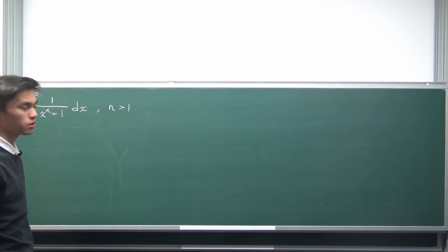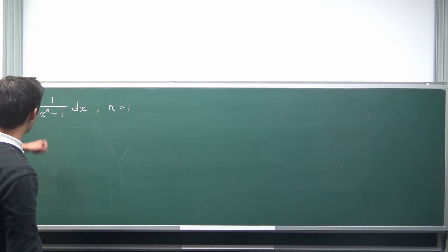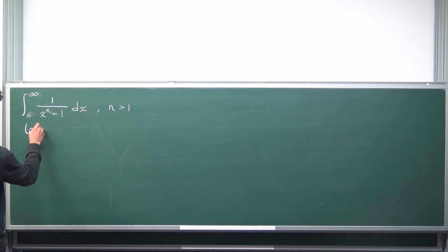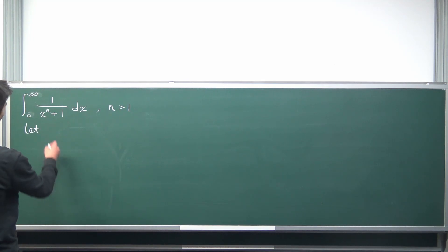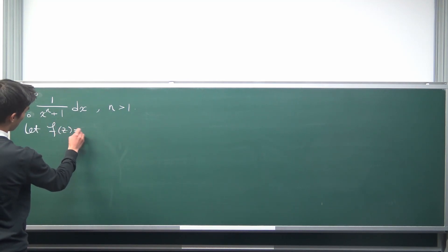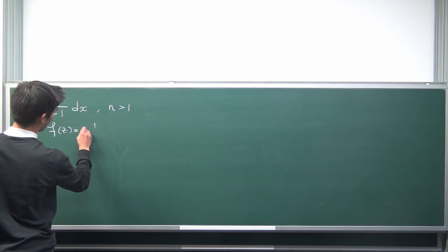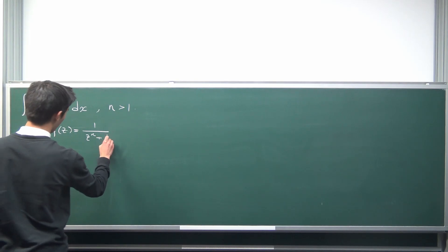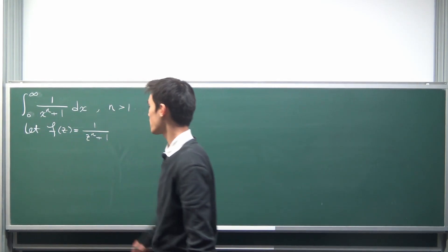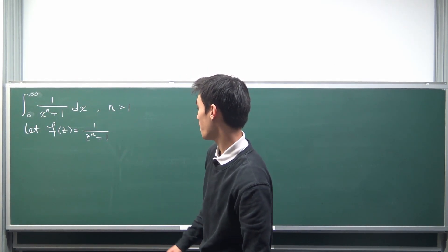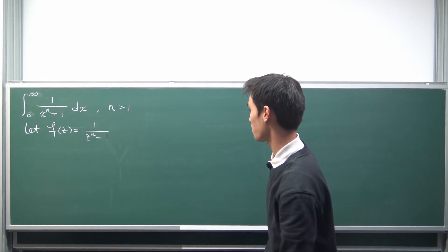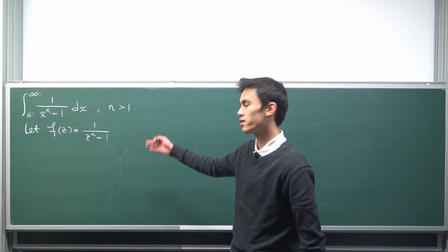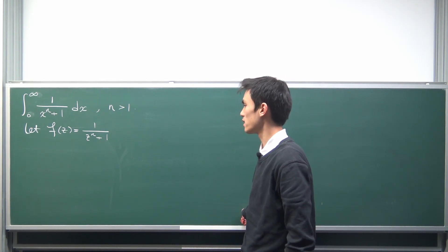First of all, how do we usually approach these when we're dealing with an improper integral? We see that we have something to integrate, so we might as well call that the integrand and rename it a function f of z. We let f of z be equal to just the integrand but we replace all the x's with z. So that's going to be one over z to the n plus one. And the idea is we're going to be integrating this function f of z in some way in the complex plane. If you have just polynomials and whatnot, it's fine to replace x's with z.